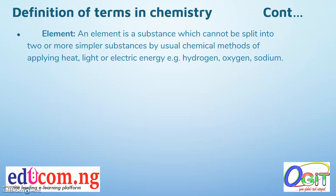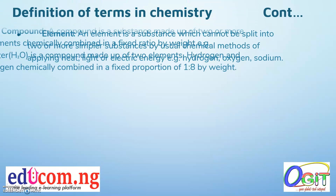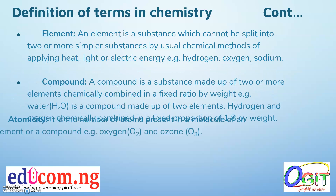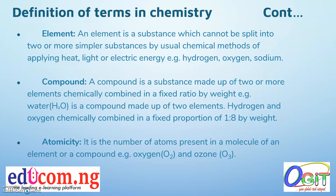An element is a substance which cannot be split into two or more simpler substances by usual chemical methods, such as applying heat, light, or electric energy — for example, hydrogen, oxygen, and sodium. A compound is a substance made up of two or more elements chemically combined in a fixed ratio by weight.